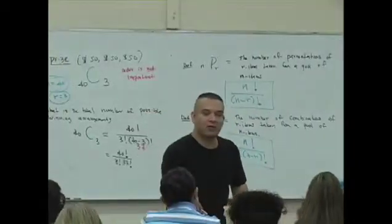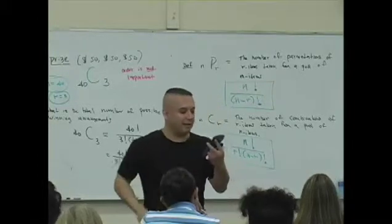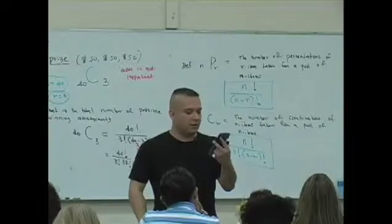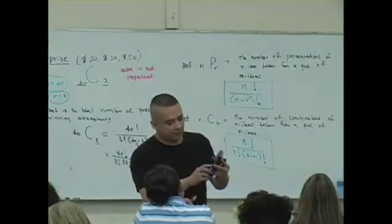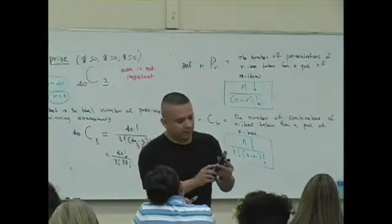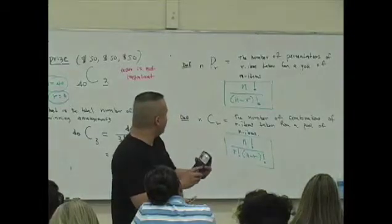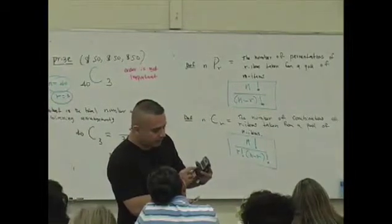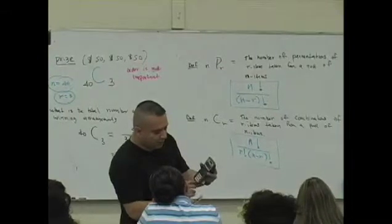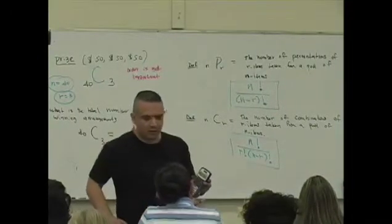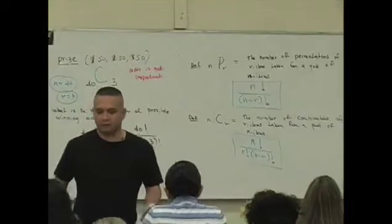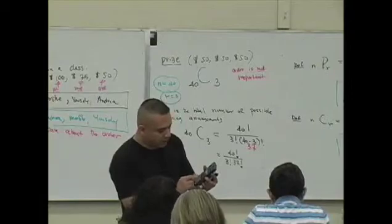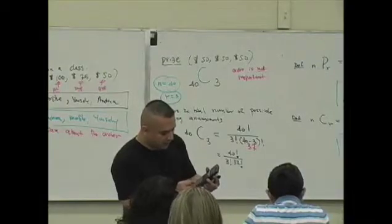But the news is even better. Why is the news even better? Because some of your calculators, don't you notice something called a combination and permutation key? Isn't there an N and a P or a C key and a P key? You know what yours is at? PRB. Probability. So this is a, was this a combination? It was, right? So I'm going to put 40 in first. Go to the combination. Combination. 3. Oh.